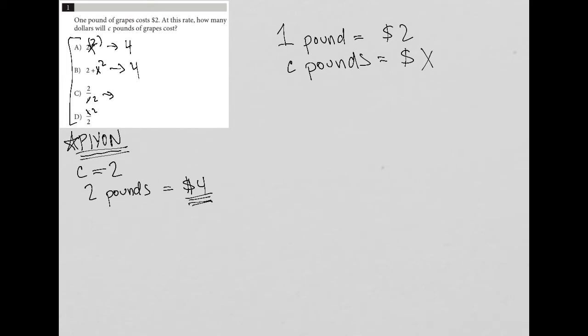Answer choice C, I get one. So that's definitely not what I'm looking for because I'm looking for four dollars. And answer choice D, I also get one. So D is out as well.